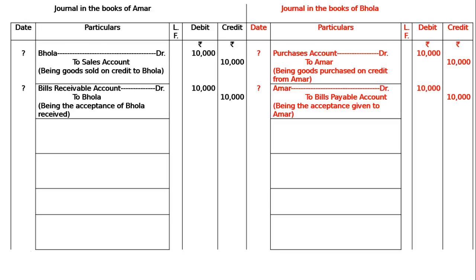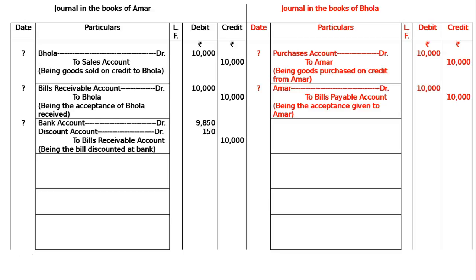Ammar discounts the bill with his bankers at a discount of Rs.150 inclusive of all charges. In the books of Ammar: Bank account debited Rs.9,850 and Discount account debited Rs.150, to Bills Receivable account Rs.10,000, being the bill discounted at a bank. There will be no entry in the books of Bhola.